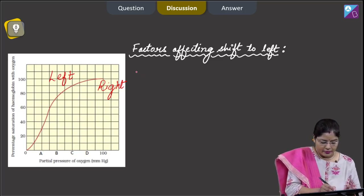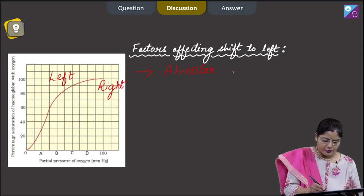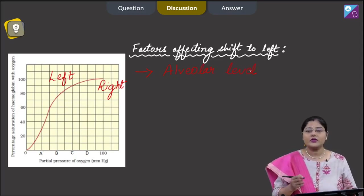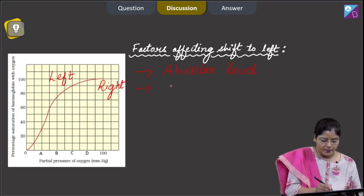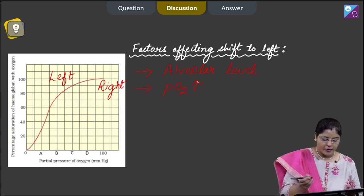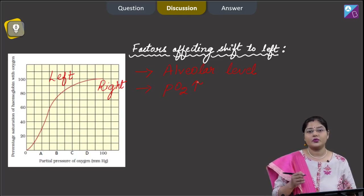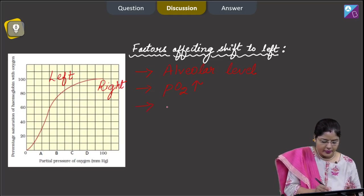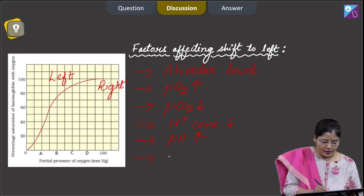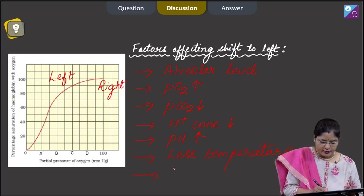Shift to the left — that is when hemoglobin is more saturated with oxygen — occurs at the alveolar level. The factors responsible for this shift to the left are: more PO2 (partial pressure of oxygen, the primary factor for formation of oxyhemoglobin), less PCO2, less H+ ion concentration, more pH, less temperature, and less BPG (bisphosphoglycerate) content.